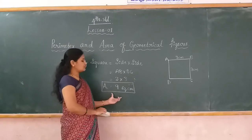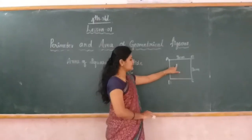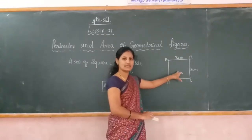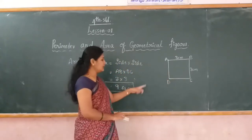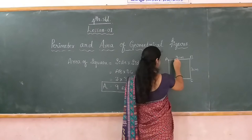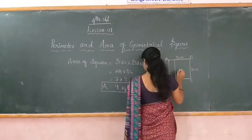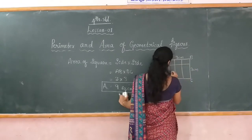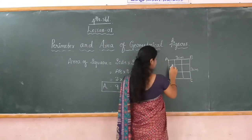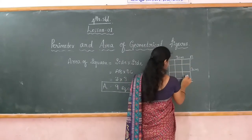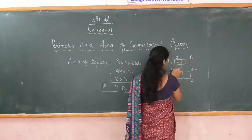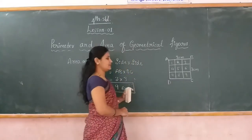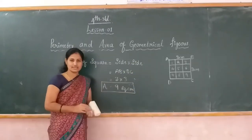Another definition is: how many squares are present in this region? That is also called area. In this square, 9 squares are present, because we get the area of the square equal to 9 square cm. There are 9 squares present in this region — 1, 2, 3, 4, 5, 6, 7, 8, 9 — that is 9 square centimeters. This is the area of the given square.